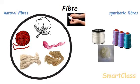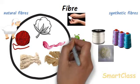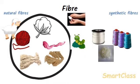Cotton, flax, and jute fibers are obtained from their respective plants, while wool is obtained from sheep and silk fiber is obtained from silkworms. The fibers which are prepared from chemical substances in industry are called synthetic fibers. Some examples of synthetic fibers are nylon, polyester such as terrylene, and polyacrylic such as orlon.